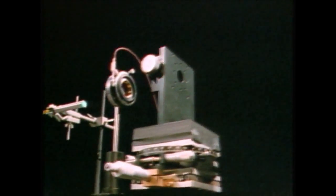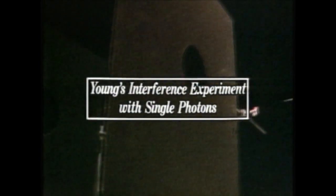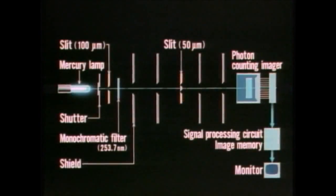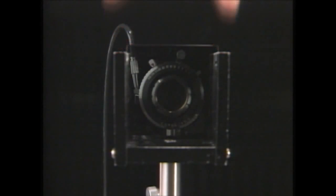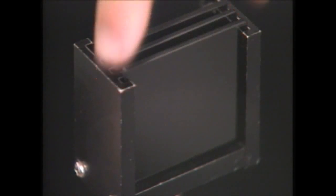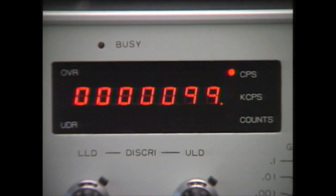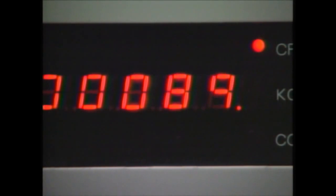Now let's start our experiment. Our light source is a low-pressure mercury lamp. We use ultraviolet light passed through a metal interference filter; the light has a wavelength of 253.7 nanometers. It passes through a single slit to increase coherence, and then goes through the double slits. We reduce the amount of light with neutral density filters until the photon count is 100 per second. At this intensity, no more than one photon at a time will be in the test device.